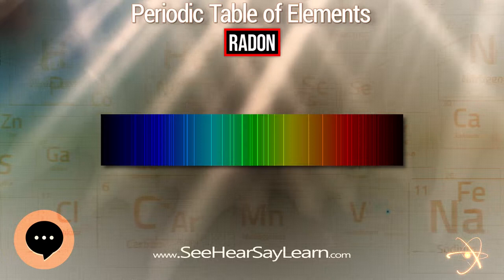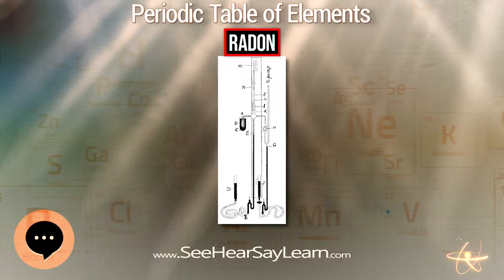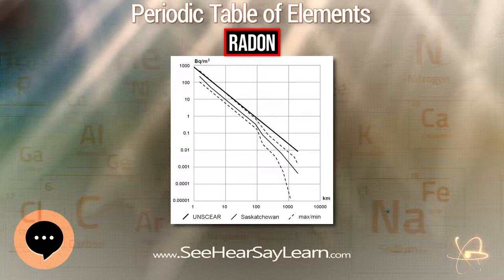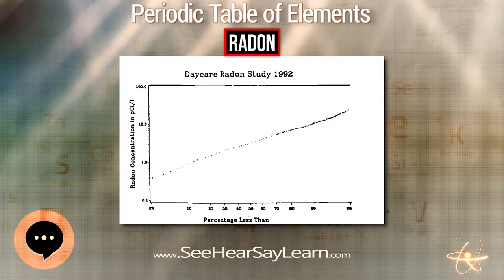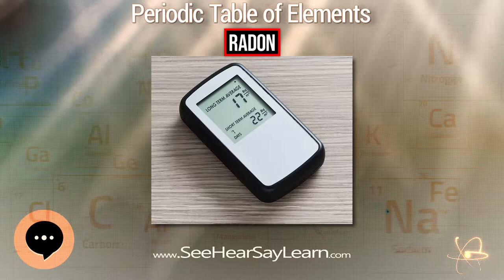Despite its short lifetime, radon gas from natural sources such as uranium-containing minerals can accumulate in buildings, especially due to its high density, in low areas such as basements and crawl spaces. Radon can also occur in groundwater, for example in some spring waters and hot springs. Epidemiological studies have shown a clear link between breathing high concentrations of radon and incidence of lung cancer. According to the United States Environmental Protection Agency, radon is the second most frequent cause of lung cancer after cigarette smoking, causing 21,000 lung cancer deaths per year in the United States.